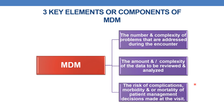Finally, risk of complications, morbidity and/or mortality of the patient management decisions that are made at the visit. So, the three key elements of MDM are: first, number and complexity of problems; next, amount of data to be reviewed; and finally, risk of morbidity and mortality.